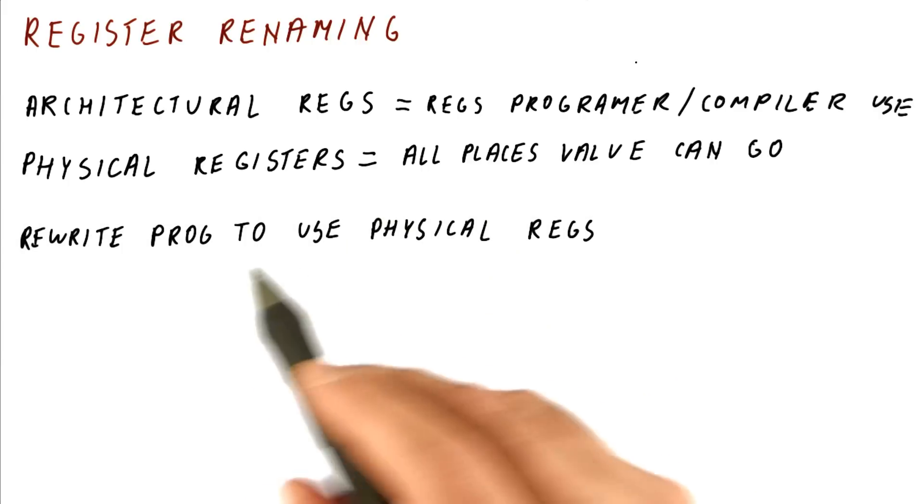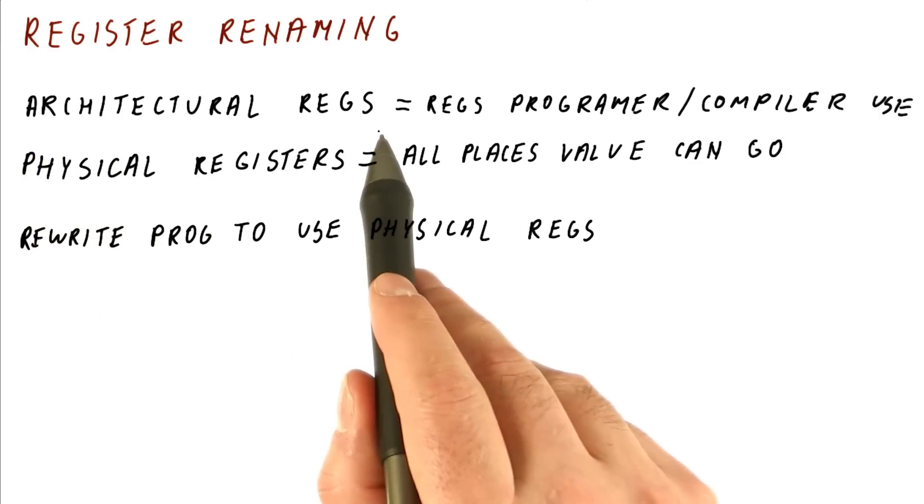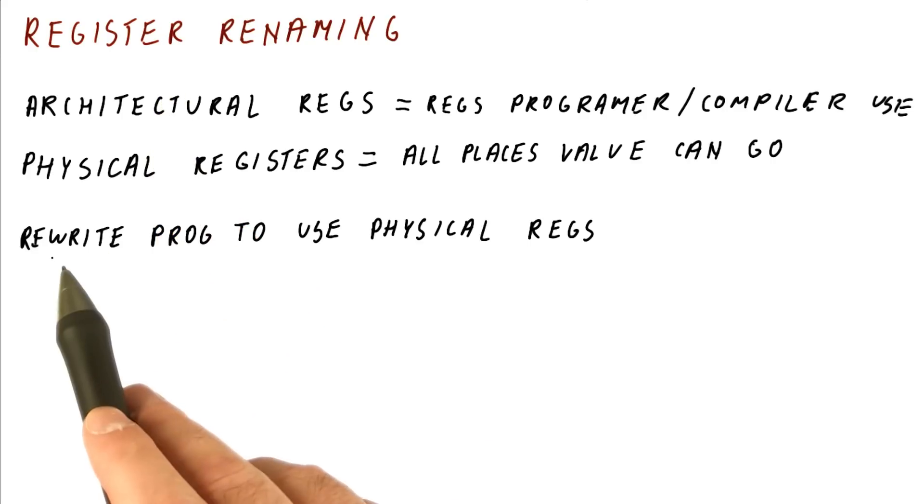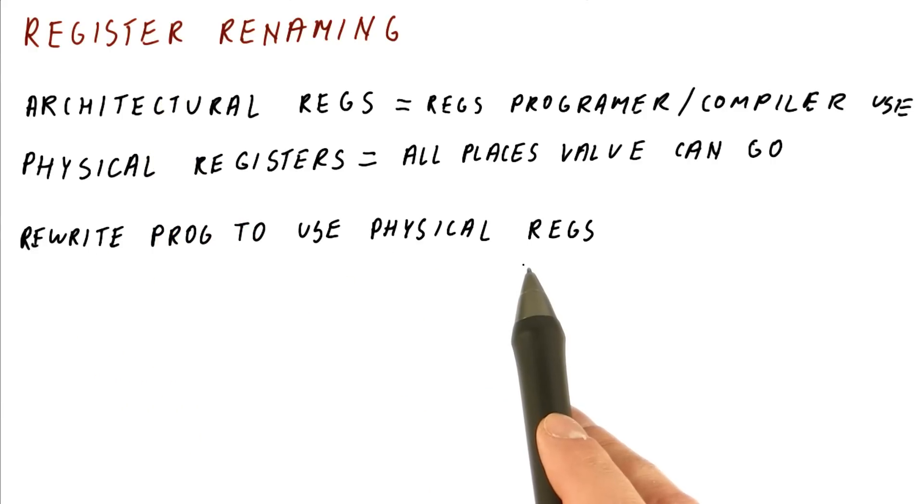As the processor reads instructions and figures out which registers they're using, and remember the program is referring to architectural registers, as it's fetching instructions and decoding them, it also does register renaming, which means it rewrites the program to use the physical registers.